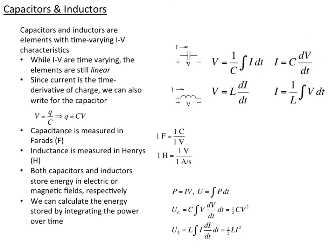You might know this as Q equals CV. If we just take the derivative of this, we get the current through a capacitor equals the rate of change of voltage across it. And the voltage across the capacitor equals the charge — the buildup of the current — so the integral of the current divided by the capacitance.